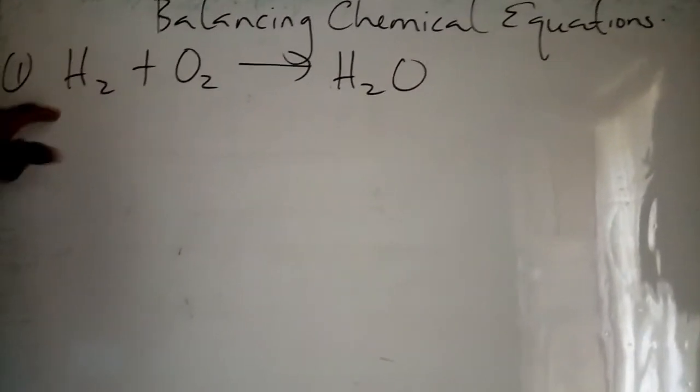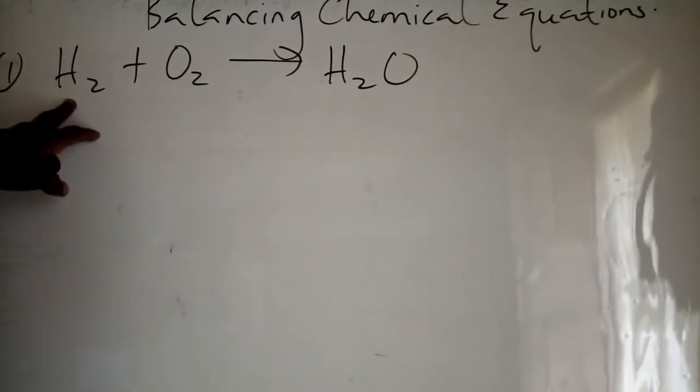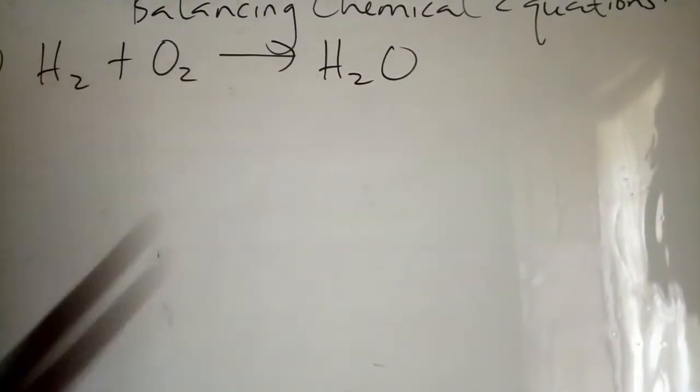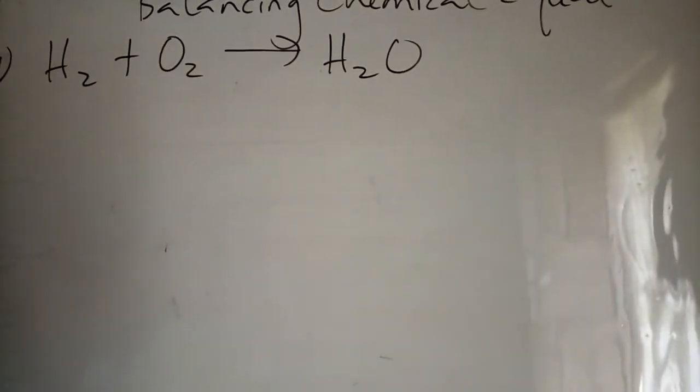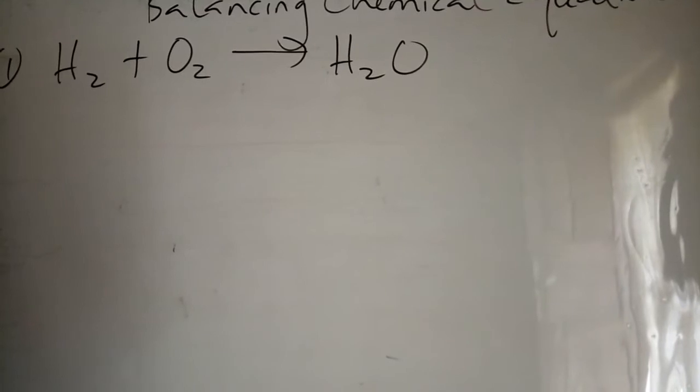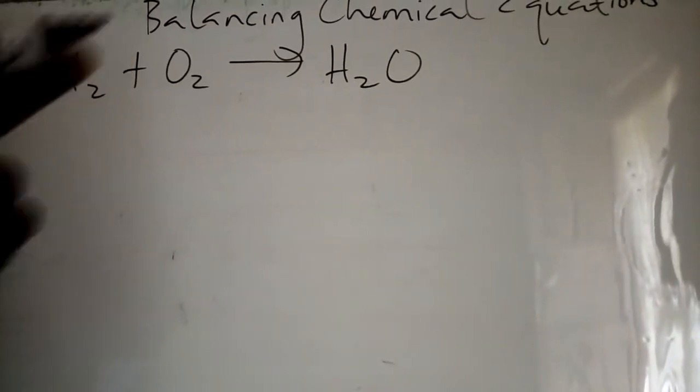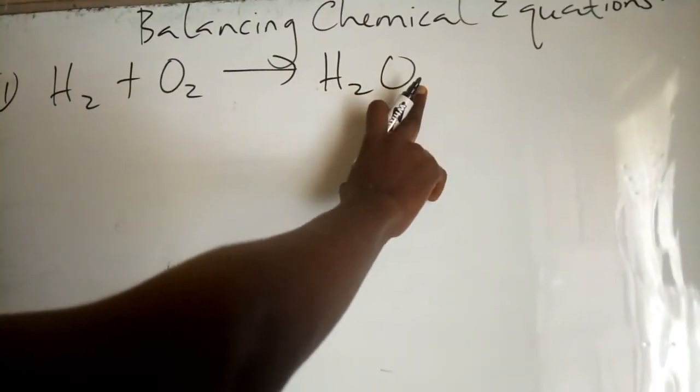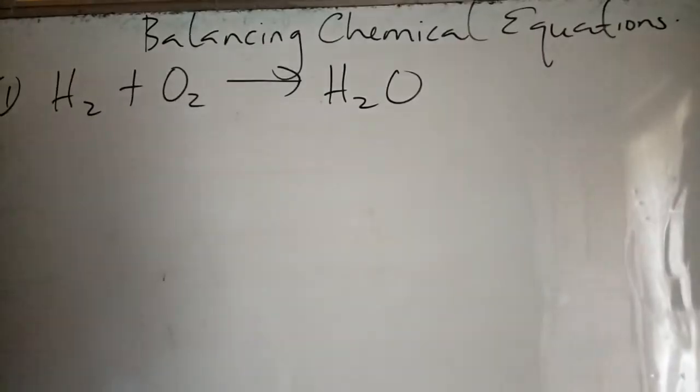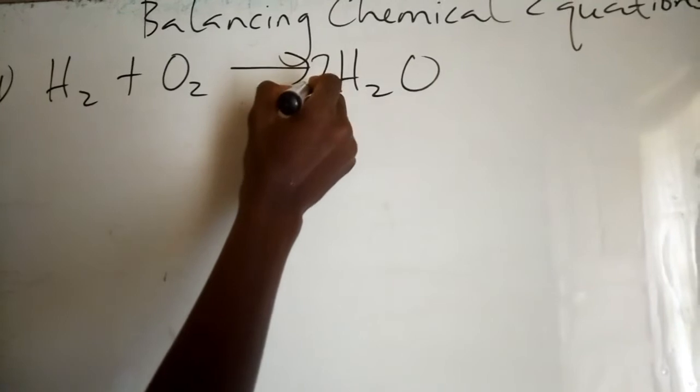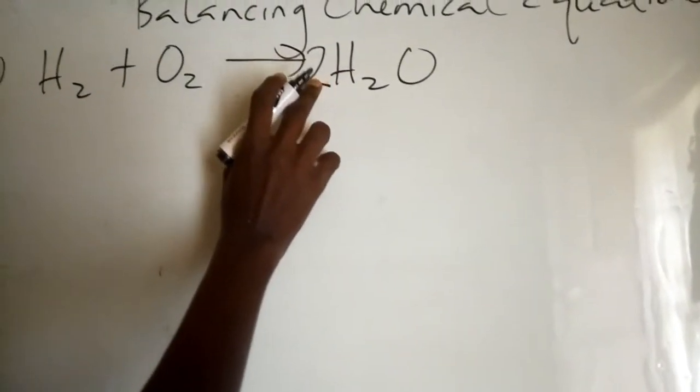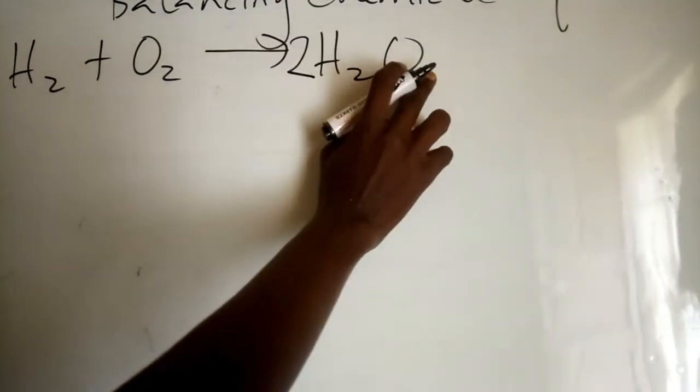If you look carefully, we have two molecules of hydrogen here and two molecules of hydrogen there. It's balanced. But we have two molecules of oxygen here and one molecule of oxygen there. So we're going to add a coefficient of 2 to the H2O. So if you put 2 here, our oxygen is now balanced. We now have two molecules of oxygen on each side.